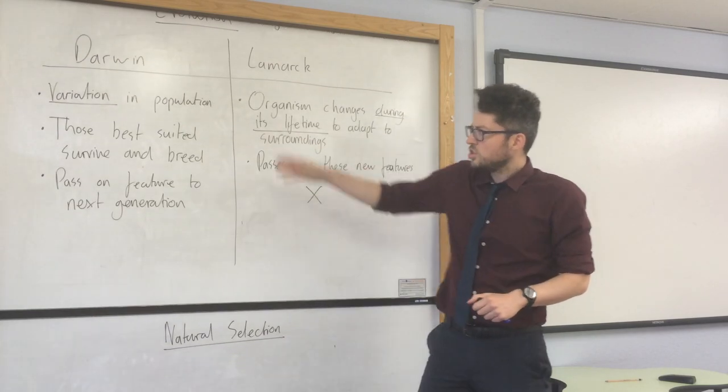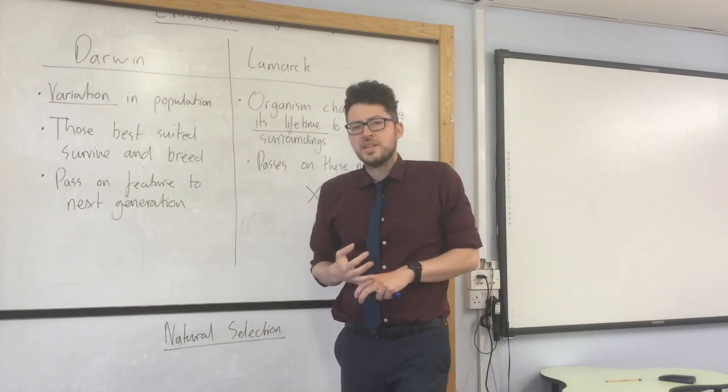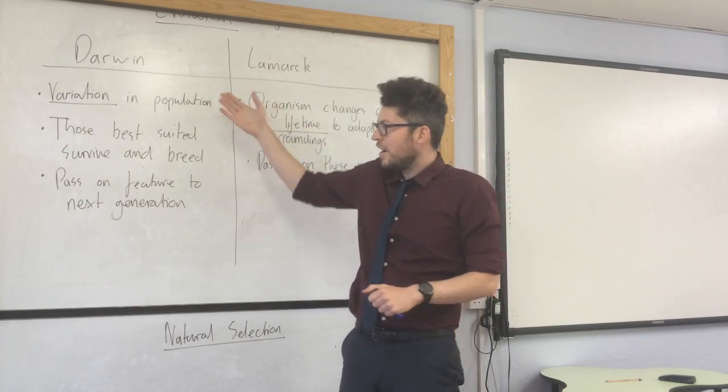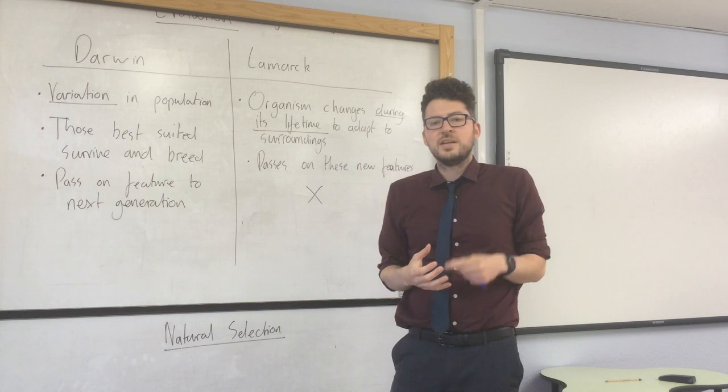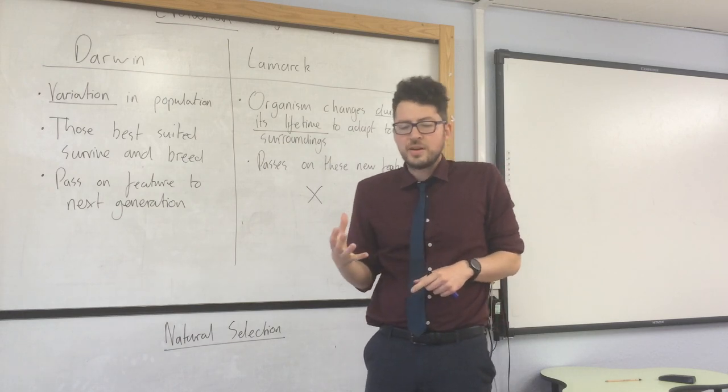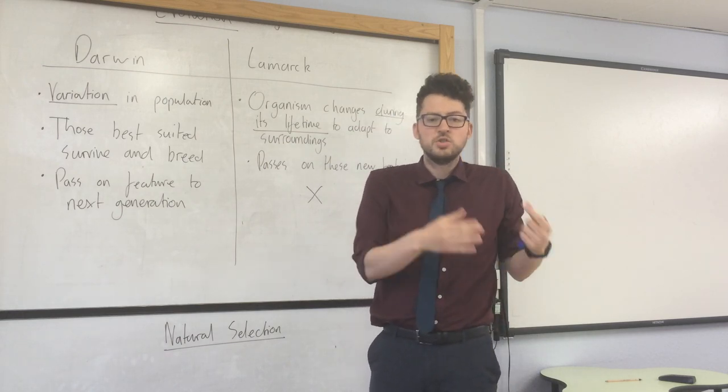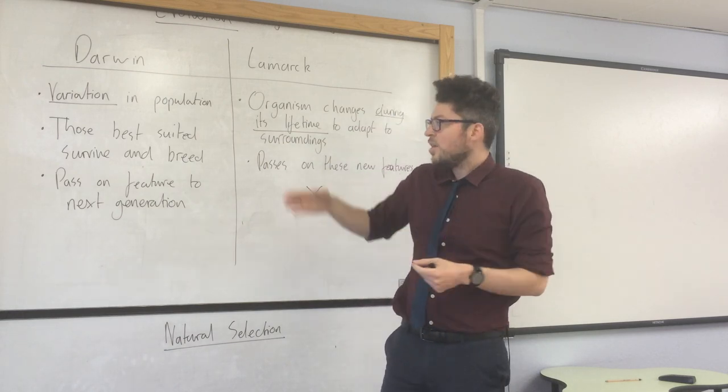So Darwin. What Darwin thought was that there would be variation in the population — so for example some giraffes would have long necks, some would have slightly shorter necks.